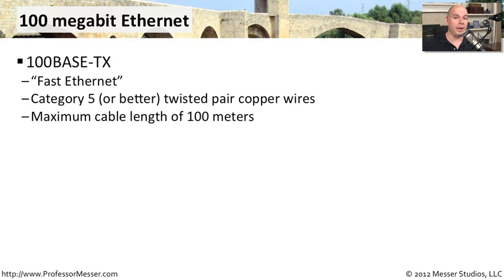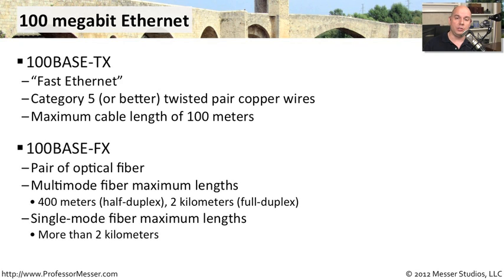If you wanted to run 100 megabit over fiber, you could do that as well. The standard for that was 100BaseFX, using pairs of optical fibers — one fiber for transmit and one for receive. The multimode fiber links for 100BaseFX were 400 meters over a half-duplex connection and two kilometers over a full-duplex connection, so you could extend this out over very large geographical distances.